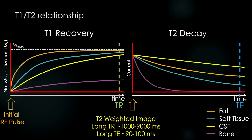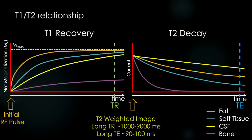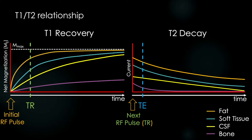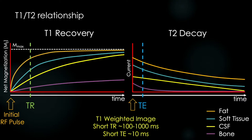A T2 weighted image requires a long TR to minimize differences produced by tissue T1 recovery time, and a long TE to maximize signal differences from varying T2 decay rates. Now for a T1 weighted image, we need a short TR to catch these tissues at different stages of rebuilding their net magnetization. We would select a short TE, as at this point the calculated current coming from each voxel will have wide variation between each tissue. So a T1 weighted image will have a short TR on the order of 100 to 1000 ms, and a short TE around 10 ms. This allows most of the differences in our measurement to arise from differences in T1 effects and minimize contributions from different T2 decay rates.